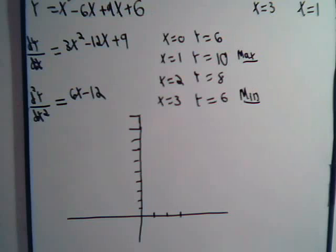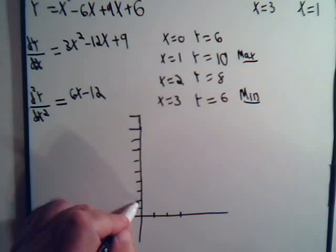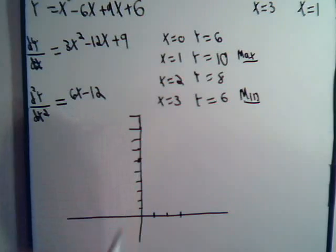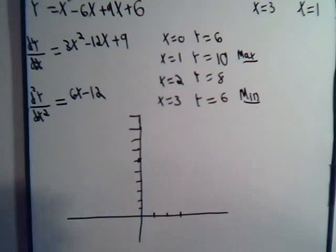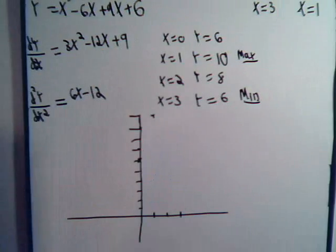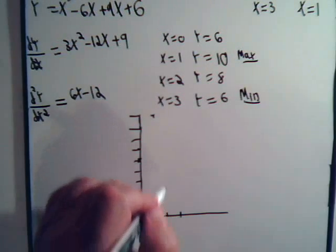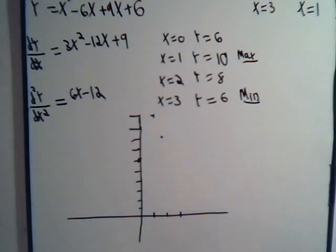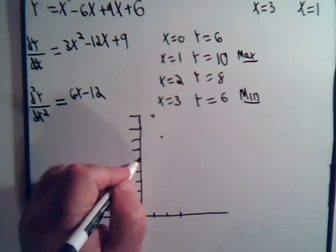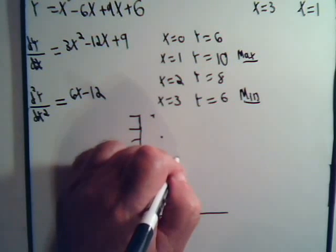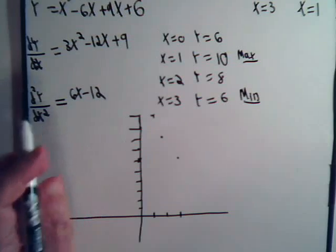When x is 0, y is 6. 1, 2, 3, 4, 5, 6. When x is 1, y is 10. When x is 2, y is 8. And when x is 3, y is back down to 6 again.